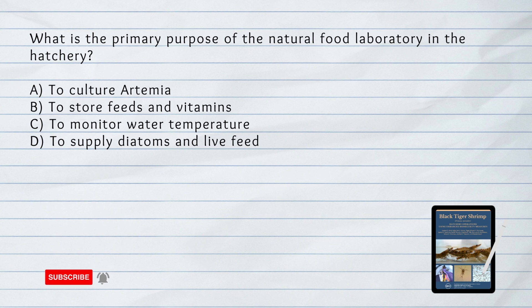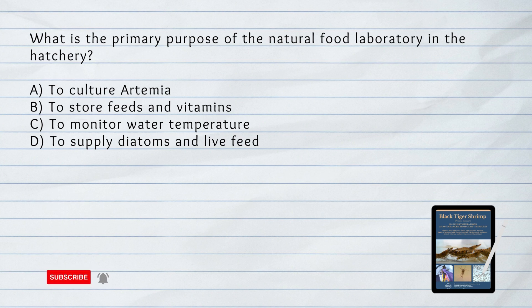What is the primary purpose of the natural food laboratory in the hatchery? A. To culture artemia. B. To store feeds and vitamins. C. To monitor water temperature. D. To supply diatoms and live feed. Answer: D. The natural food laboratory in the hatchery is responsible for culturing diatoms and artemia, which are essential for feeding the shrimp larvae.